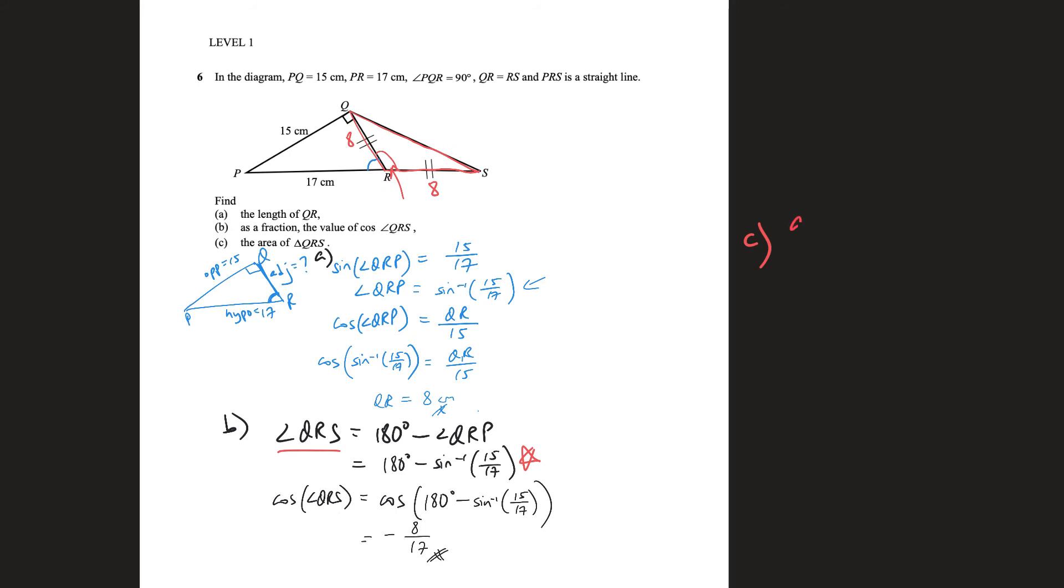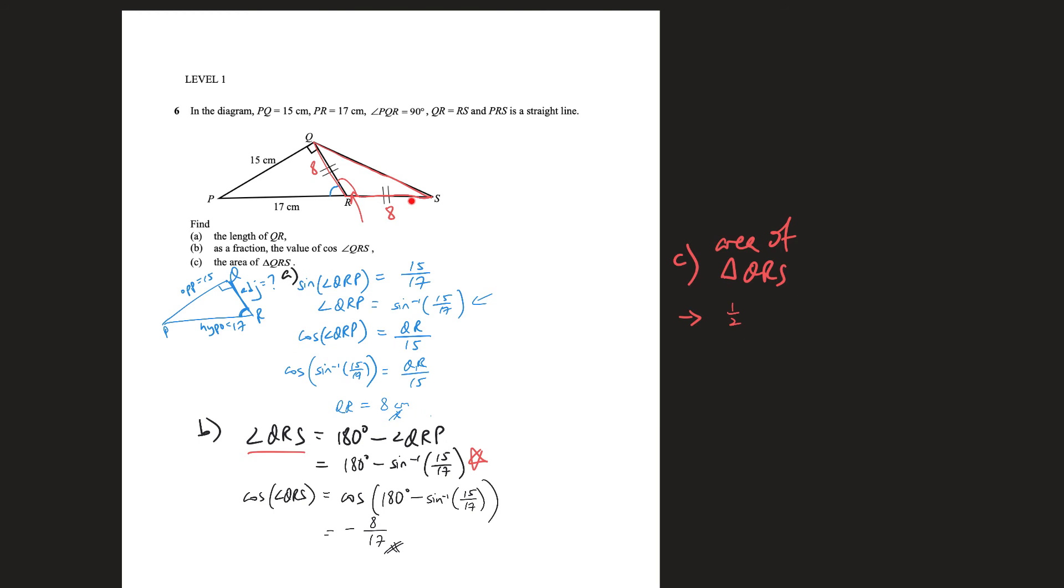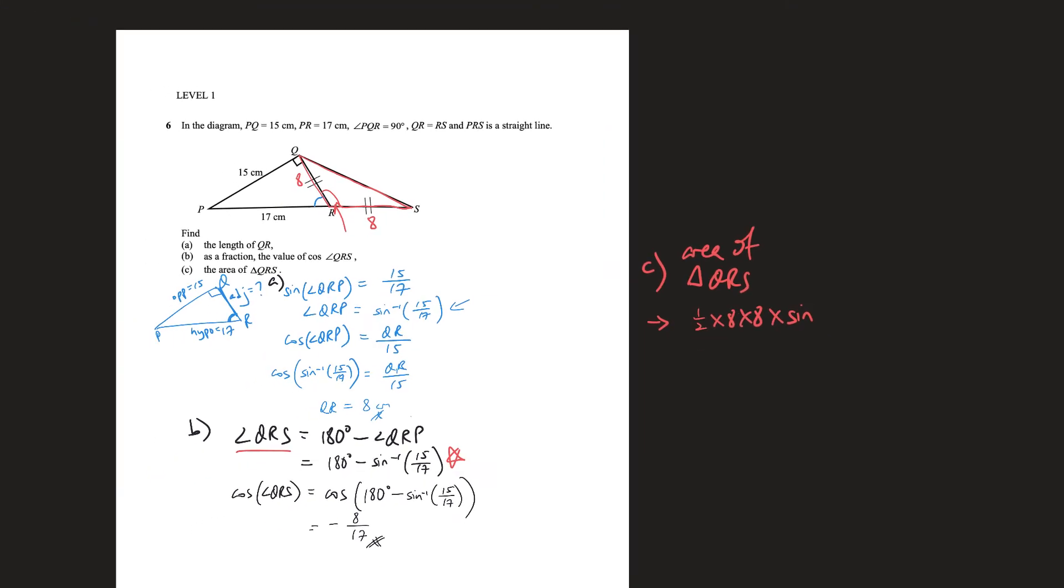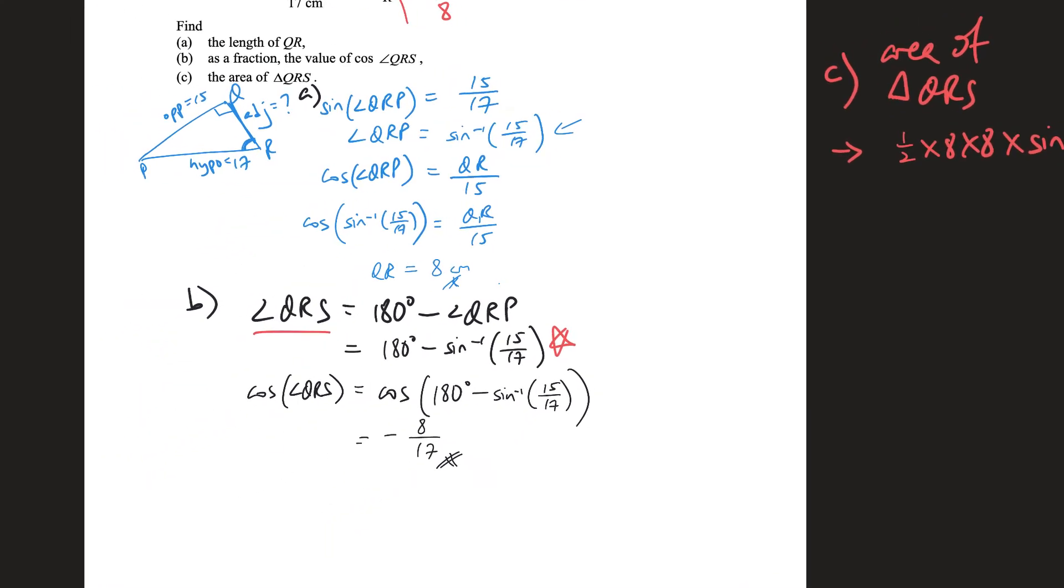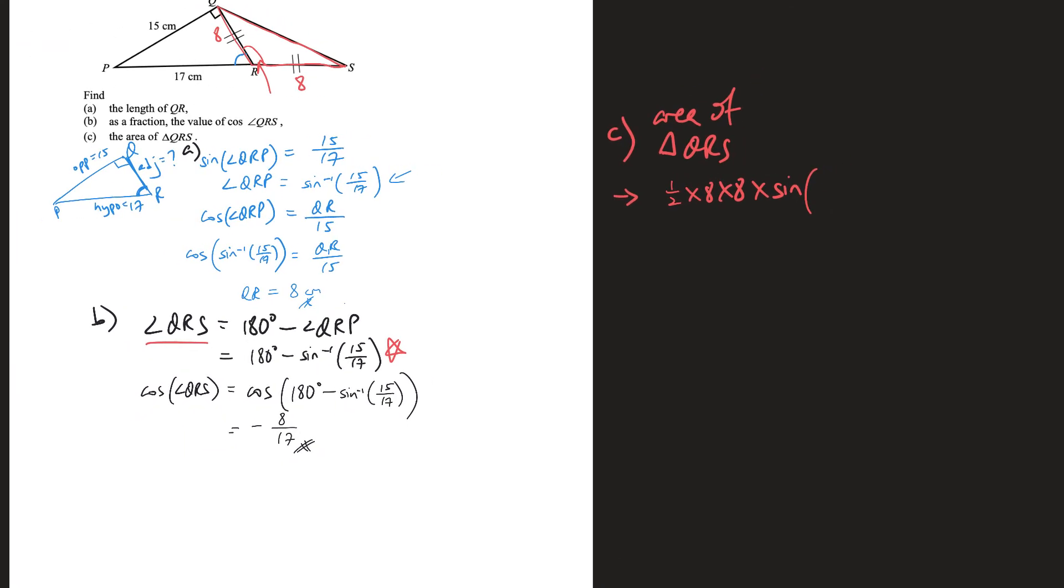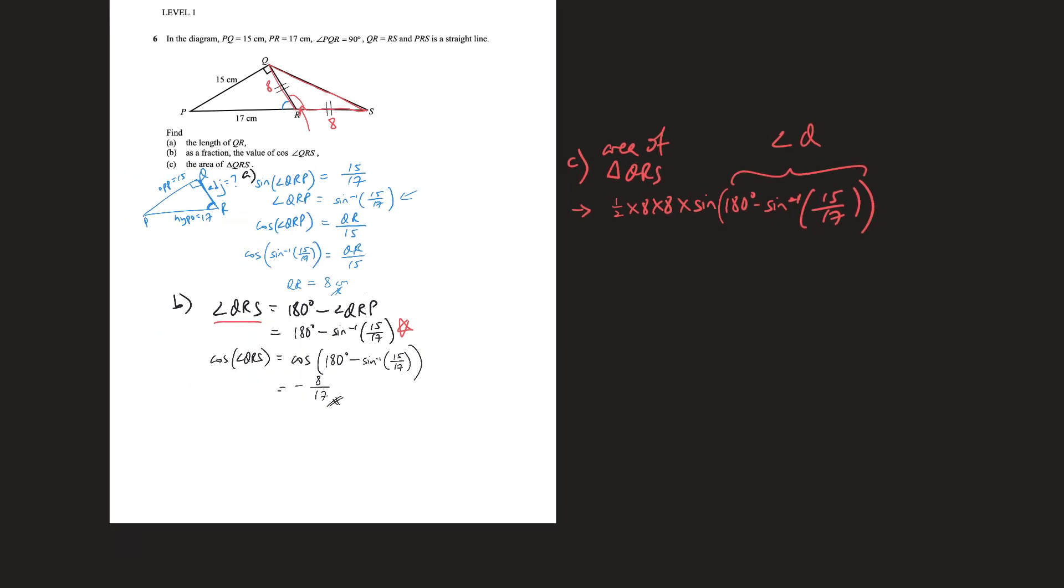So we can use the formula that we know. You can say the area of triangle QRS is simply half of AB sine C, so AB and sine of the angle in between. So it's going to be 8 times 8 times sine of the angle in between. And sine of the angle in between, what's the angle in between? QRS, which is this whole chunk. So I'm just going to write it in. Now if you don't like to do it this way, you can actually just type it in separately. Solve it step by step. But for me it's because I don't want to round up or down.